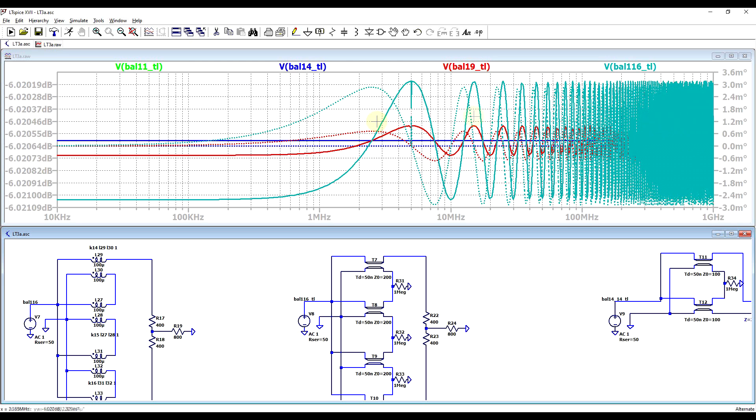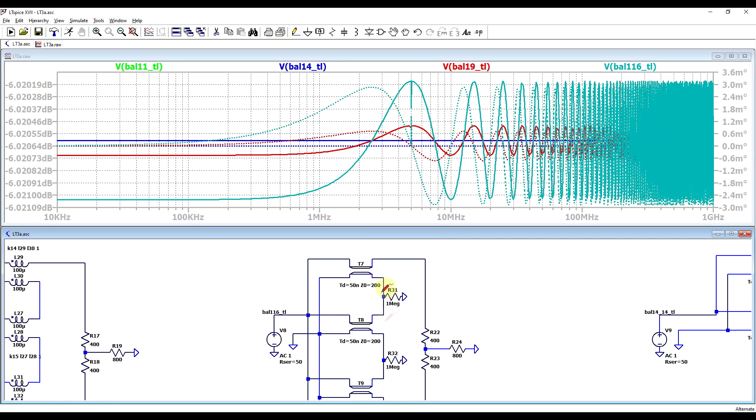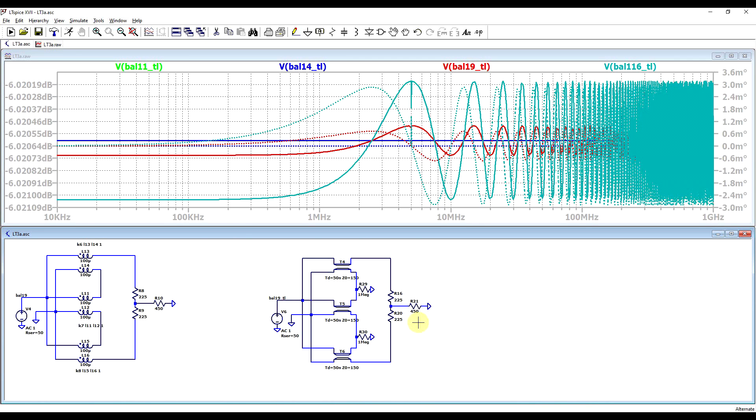Now we are getting this oscillation appearing, which is extremely small, but this is happening because the simulation was giving me errors because of the floating lines, so I had to add in a bunch of these 1 Mohm resistors. But regardless, in all cases we are getting a good matching with the calculated transmission line impedances.